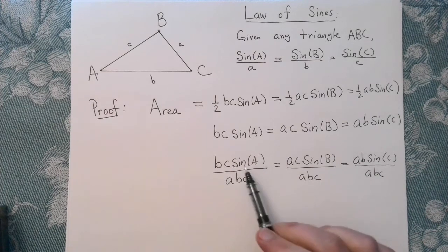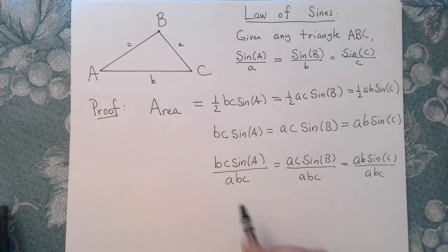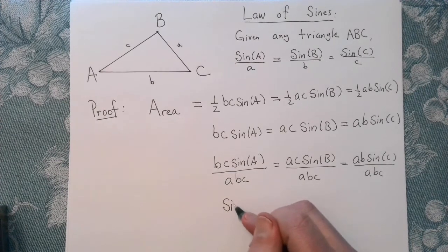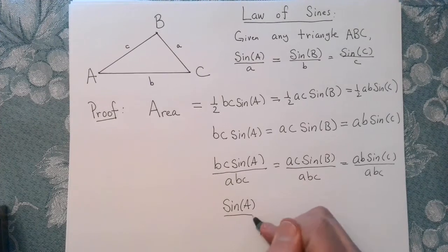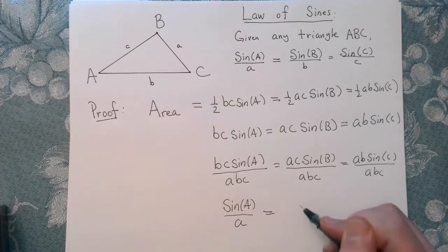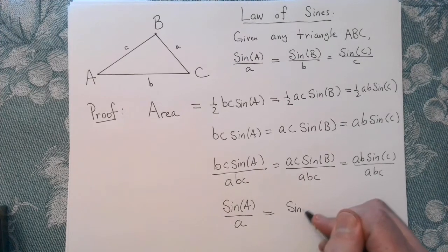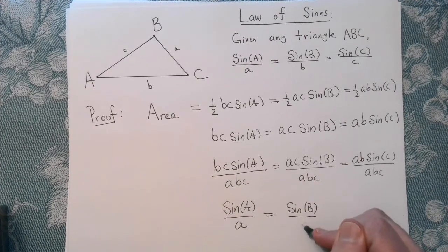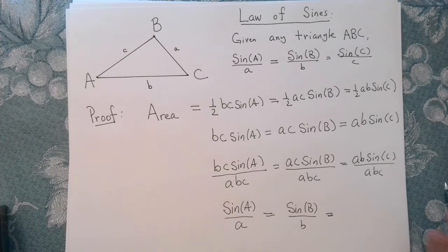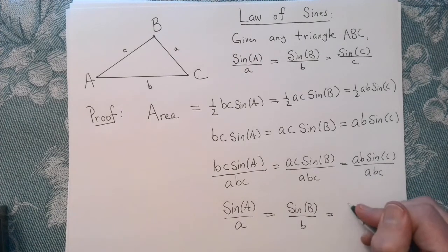And of course, we're assuming that none of these values are zero. So we can reduce this. BC will cancel here and here, and I get sine of A over A is equal to, so this will cancel with this, sine of B over little b. And these will cancel, and I get sine of C.